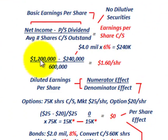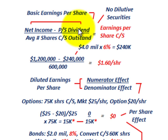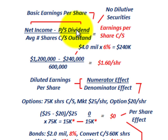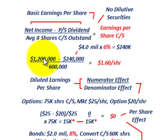For basic earnings per share, there are no dilutive securities involved. We take net income for the year and subtract the preferred stock dividend — that always has to be subtracted out — then divide by the average number of shares of common stock outstanding. So: $1.2 million minus $240,000 (which is $4 million × 6%) divided by 600,000 shares equals basic EPS of $1.60 per share.